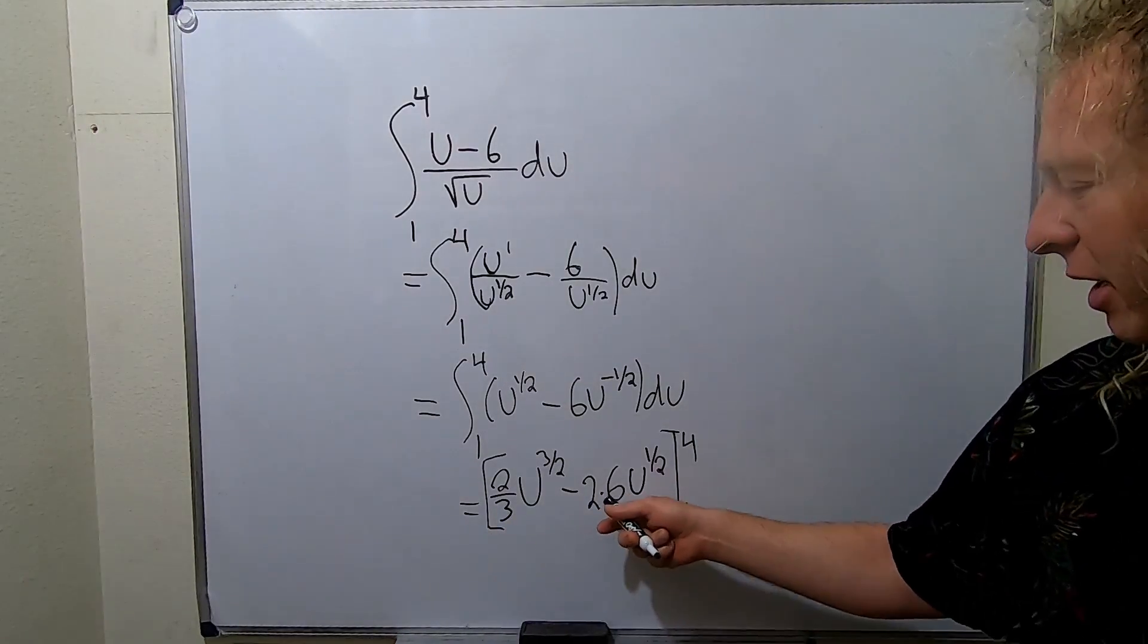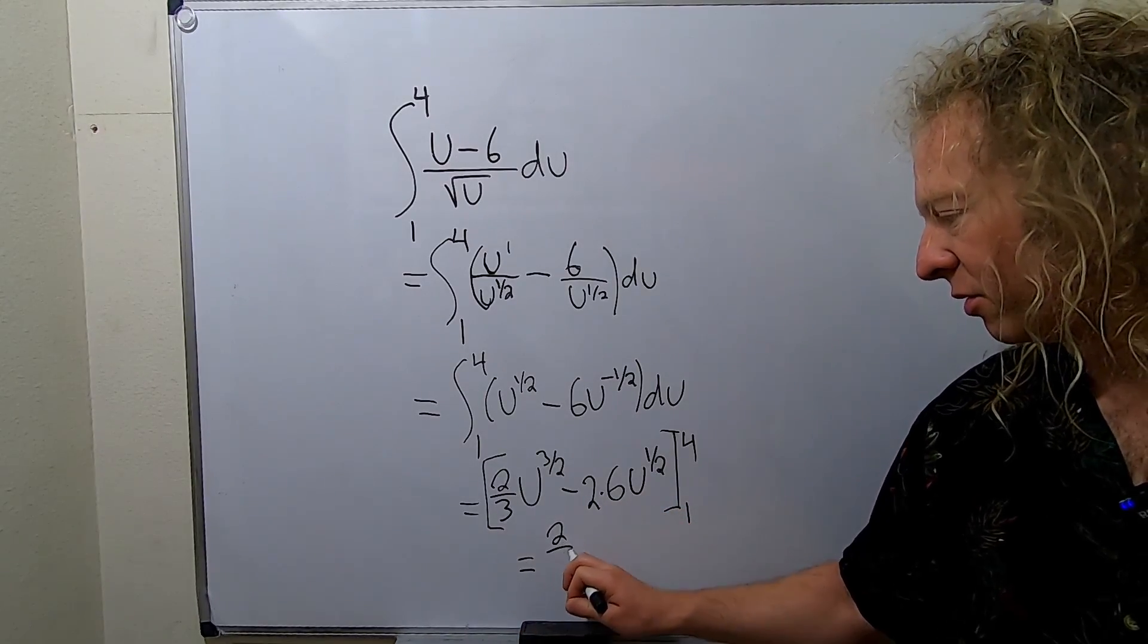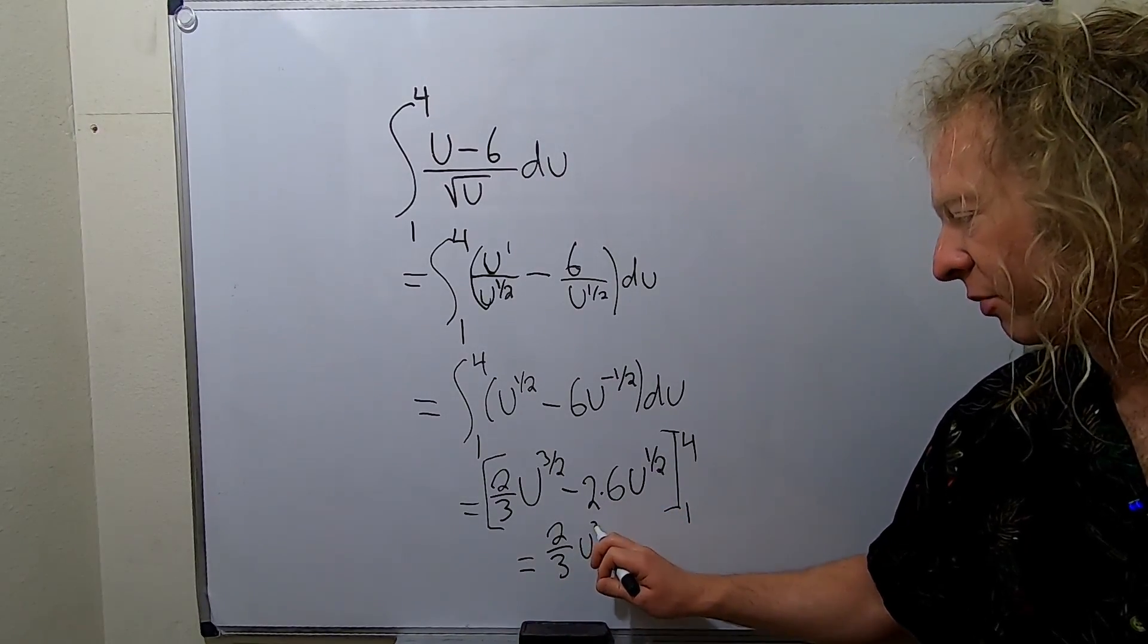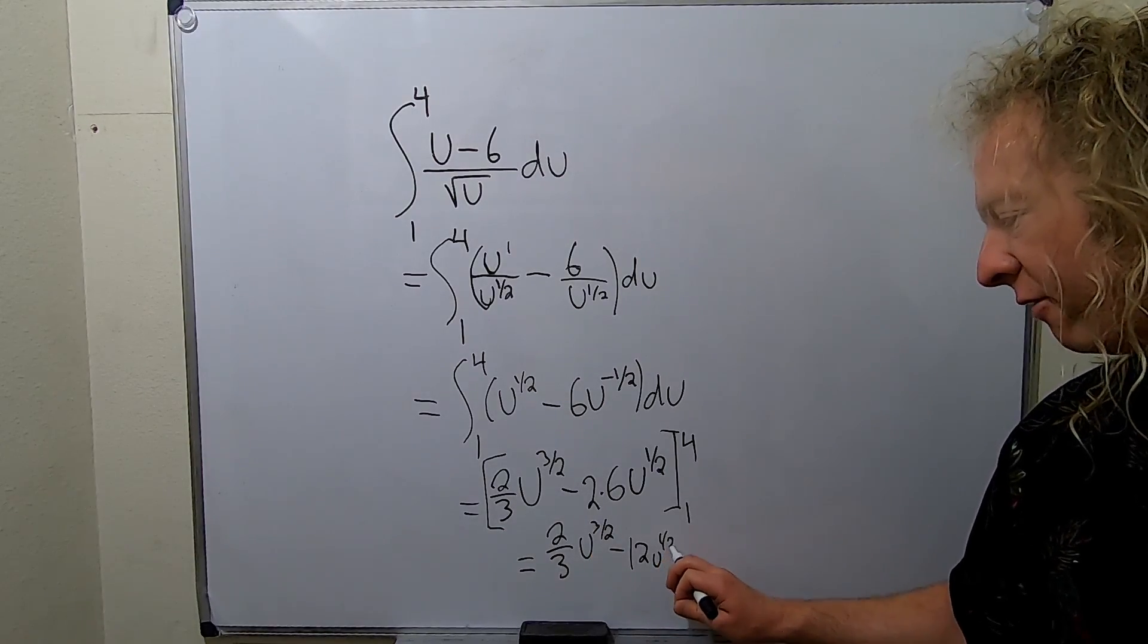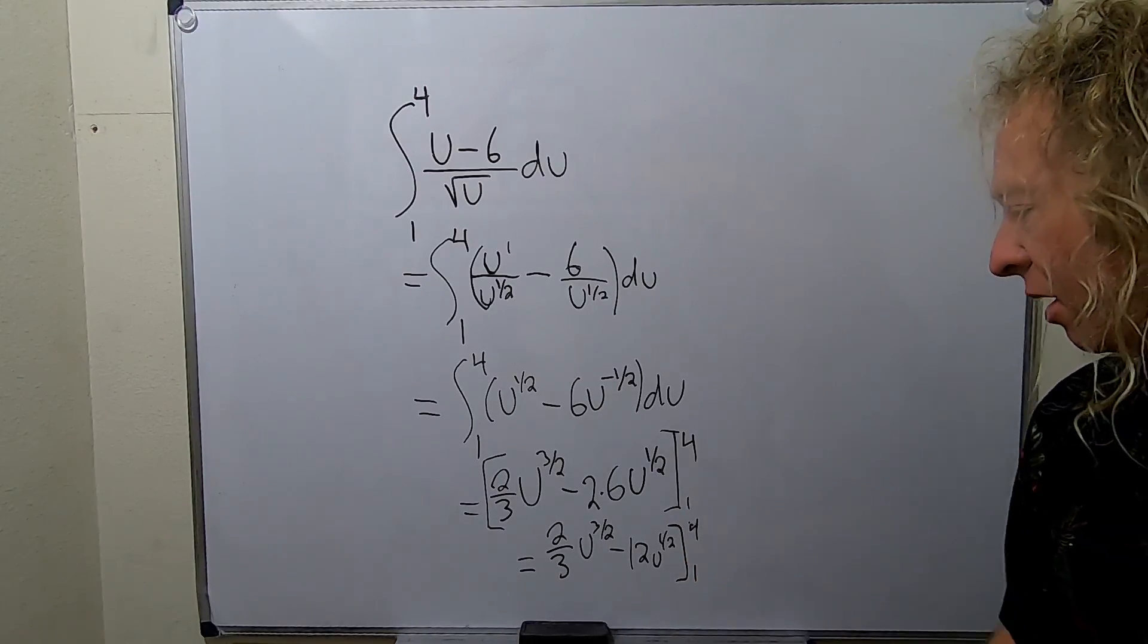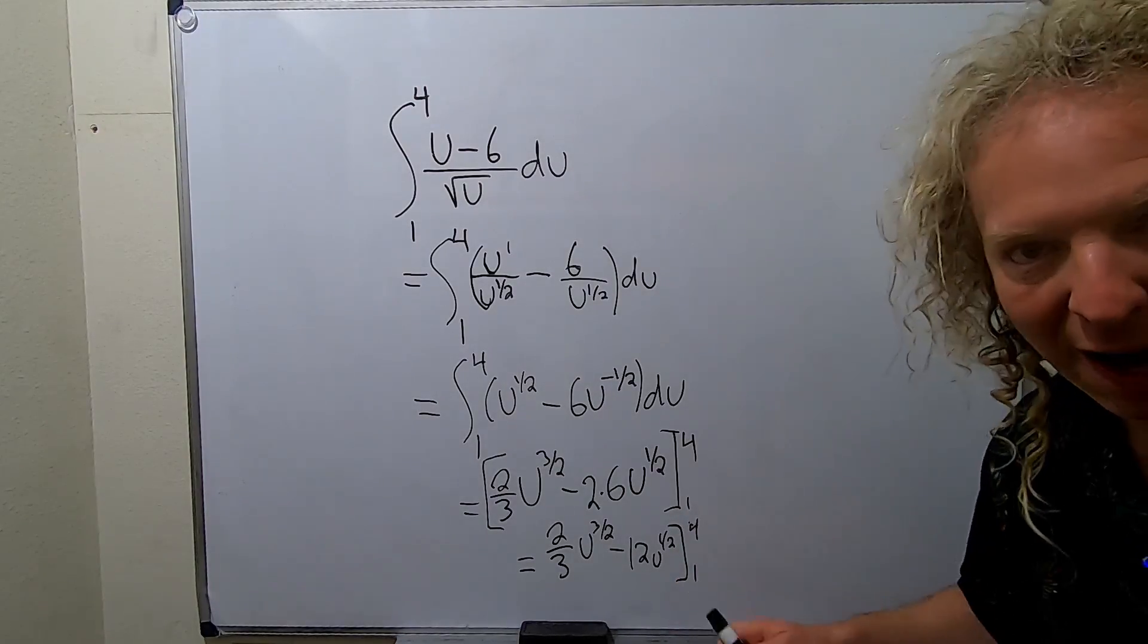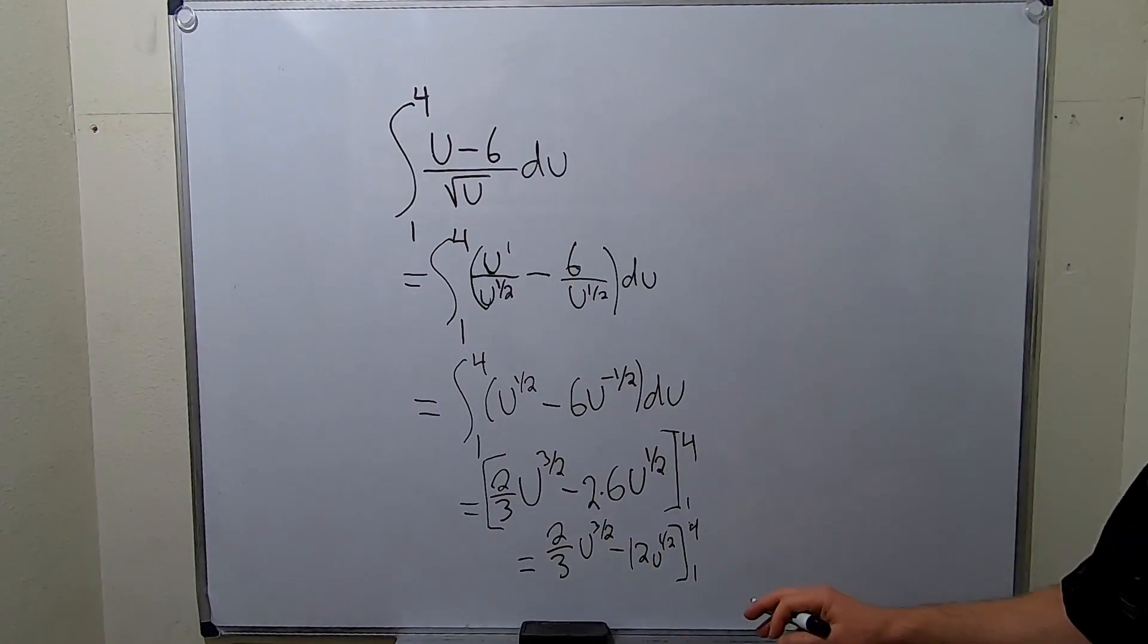I'm going to clean this up a little bit. So I'm going to write this again. This is 2 thirds u to the 3 halves minus 12 u to the 1 half. And then we have our limits. Let me just write it again: 1 to 4. First you always plug in the top number. It's always the top number first. You subtract, then you plug in the bottom number.